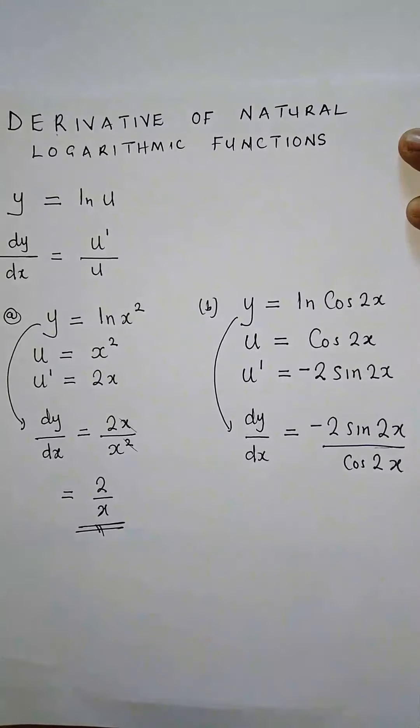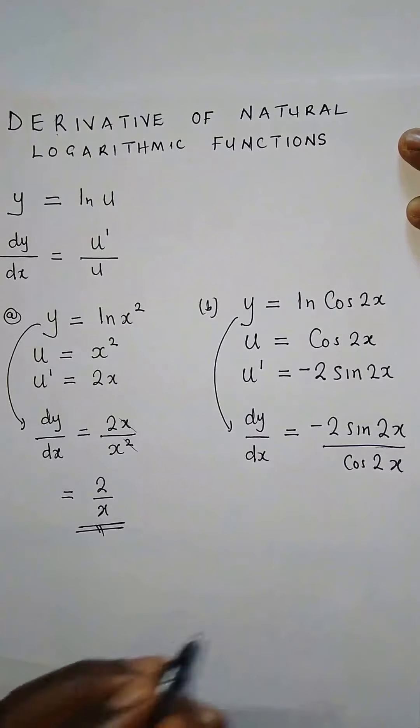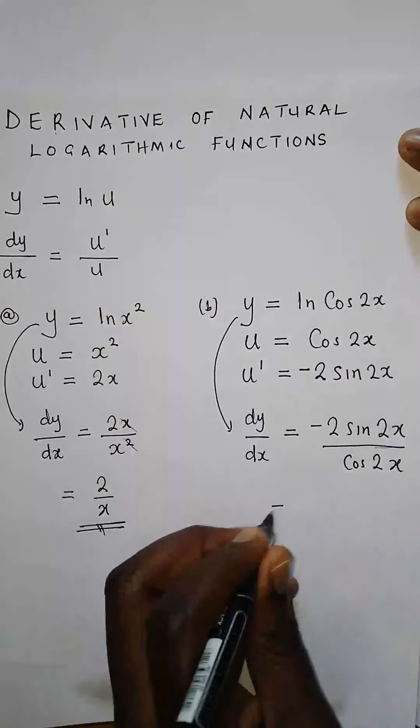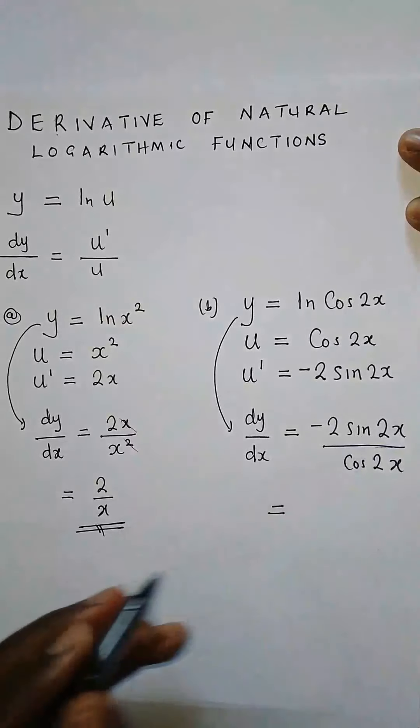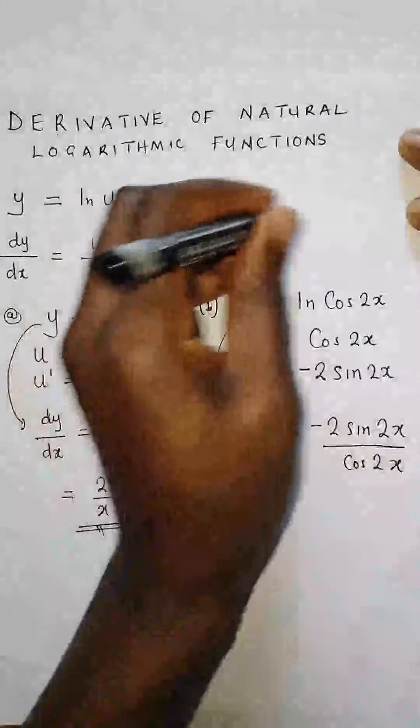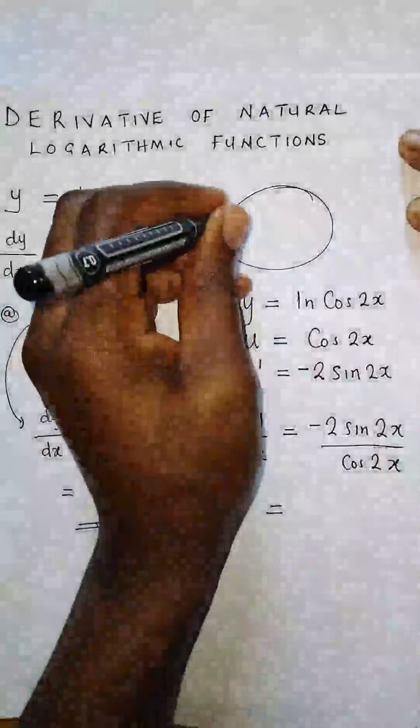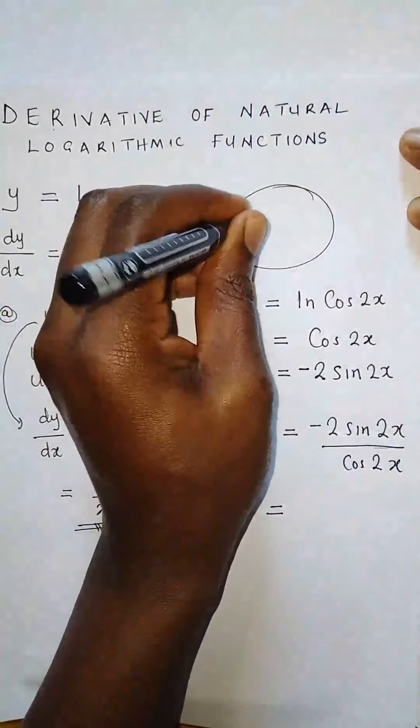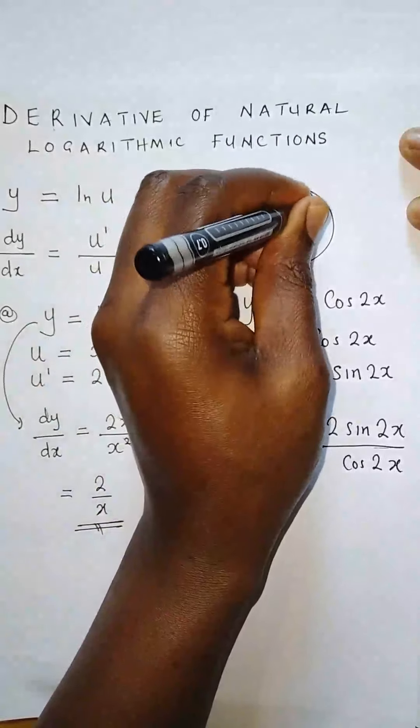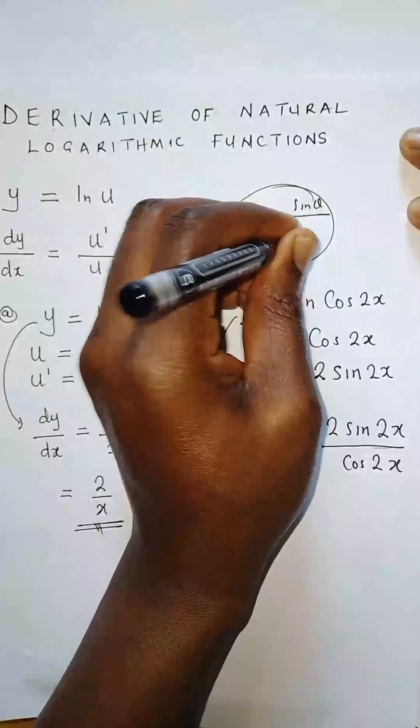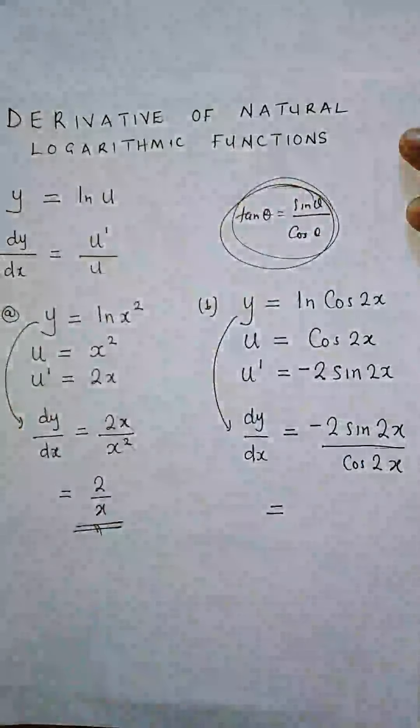That is what we have. Now, if you recall, we can apply the trigonometric identities. We know that tan theta equals sine theta over cos theta. So applying this identity...